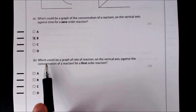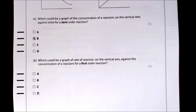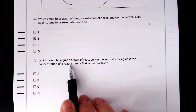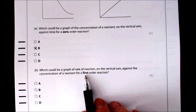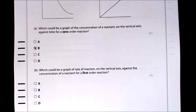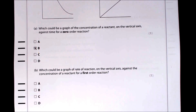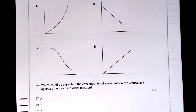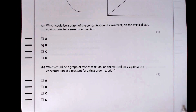Part B asks which is a graph of rate of reaction on the vertical axis against concentration of a reactant for a first-order reaction. For a first-order reaction, doubling the concentration doubles the rate, so we expect a linear relationship. Looking at the graphs, the answer is D, where rate increases linearly as concentration increases.